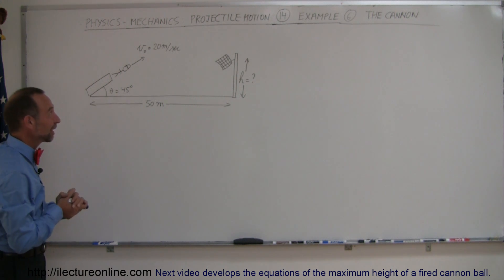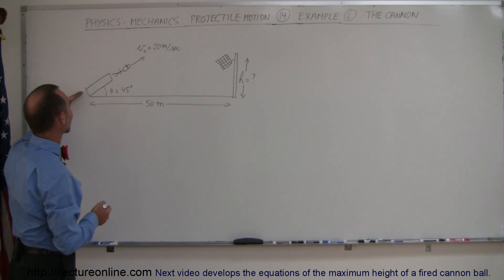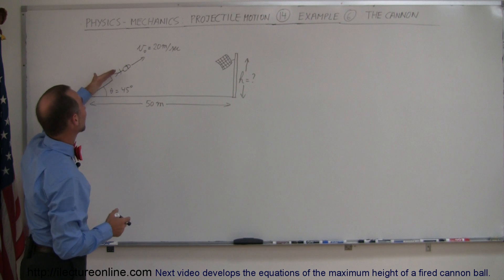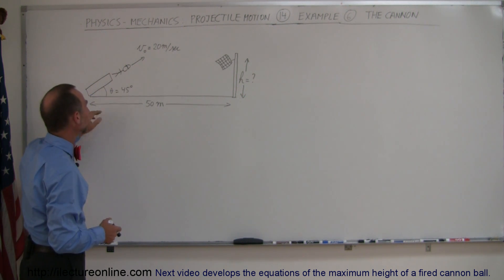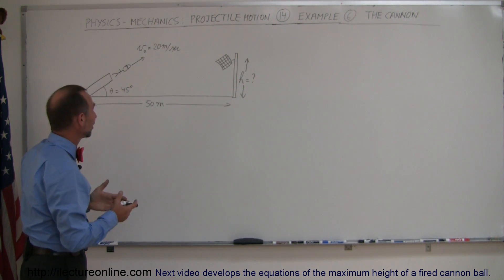Another classical problem in projectile motion is, of course, from the circus. Here we have a cannon in the circus, a person that's crazy enough to go through this, being shot out by the cannon at a speed of 20 meters per second at an angle of 45 degrees. And 50 meters away, a net will be positioned to catch this person.